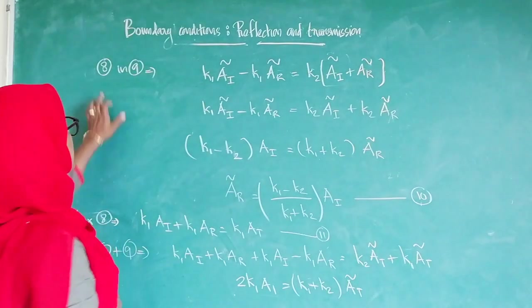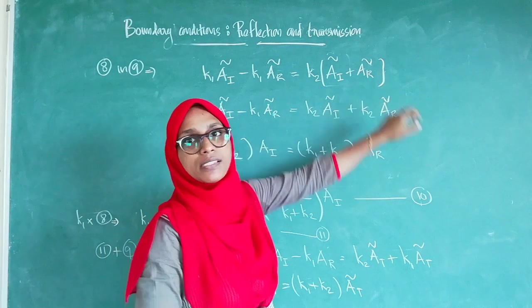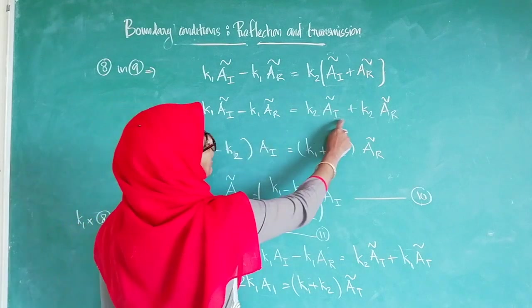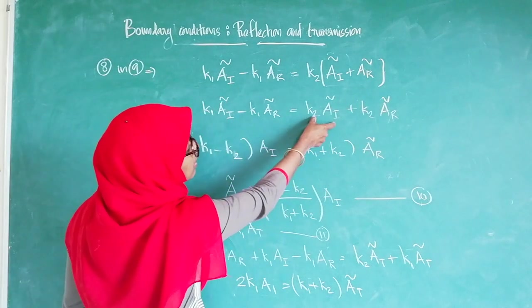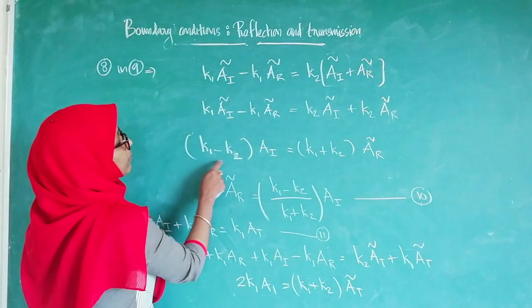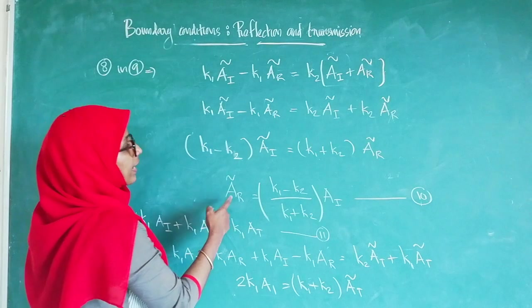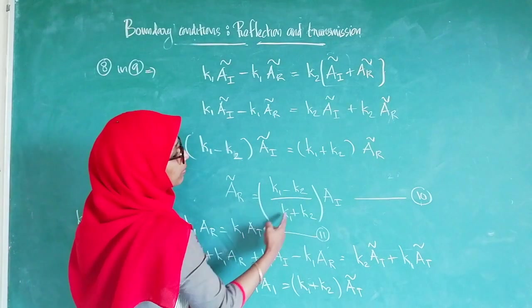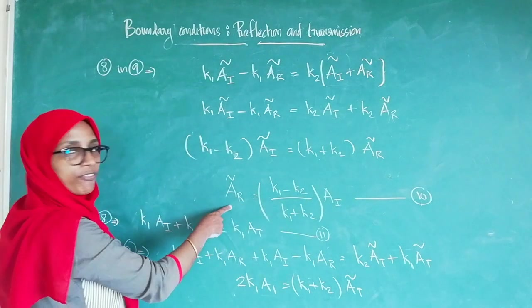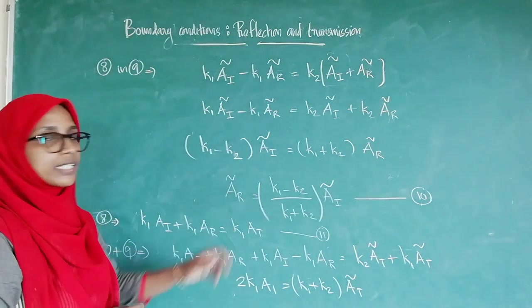Substituting equation 8 into equation 9: K1·A_I minus K1·A_R equals K2·(A_I plus A_R). Rearranging, (K1 minus K2)·A_I equals (K1 plus K2)·A_R. Therefore, A_R equals (K1 minus K2) by (K1 plus K2) times A_I, which is the expression for the complex amplitude of the reflected wave in terms of the incident complex amplitude — equation 10.